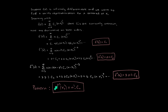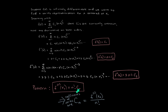Do you see a pattern? The nth derivative with x-naught plugged in will be equal to n factorial times cn — this is 3 factorial, 2 factorial, and here there's an implicit 1 factorial. Therefore, the cn's must be equal to the nth derivative with x-naught plugged in, divided by n factorial. Those are the coefficients of the Taylor series for any random function.